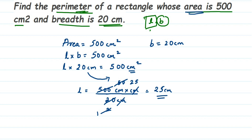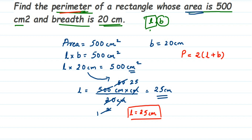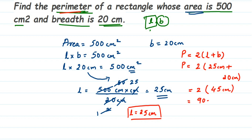So length = 25 centimeter. Now we have both sides: length = 25 cm and breadth = 20 cm. The perimeter formula is P = 2 × (length + breadth). Substituting: P = 2 × (25 + 20) = 2 × 45 = 90 centimeter. So the perimeter is 90 centimeter.